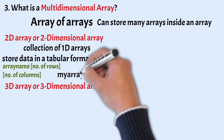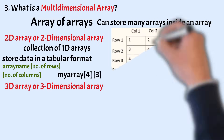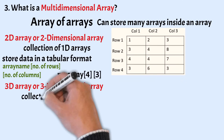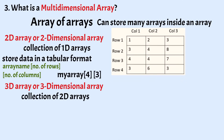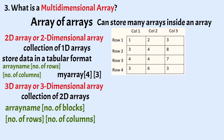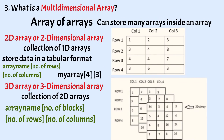Let's have an example of a 2D array — this array will have four rows and three columns. A 3D array is a collection of 2D arrays, or we could say it is a collection of multiple tables. It can be represented as: array name, number of blocks, number of rows, and number of columns, where number of blocks specifies the number of 2D arrays.